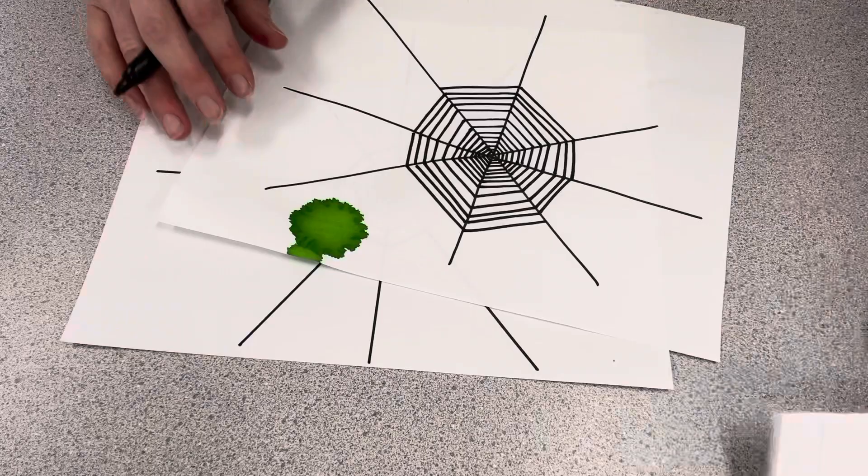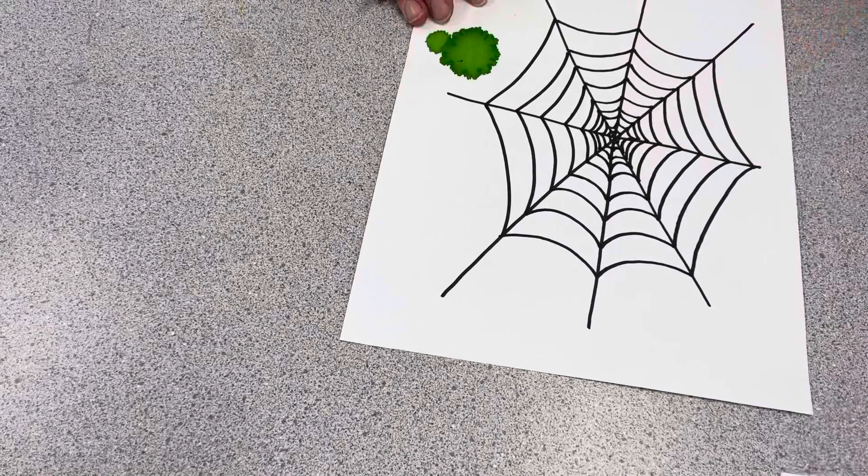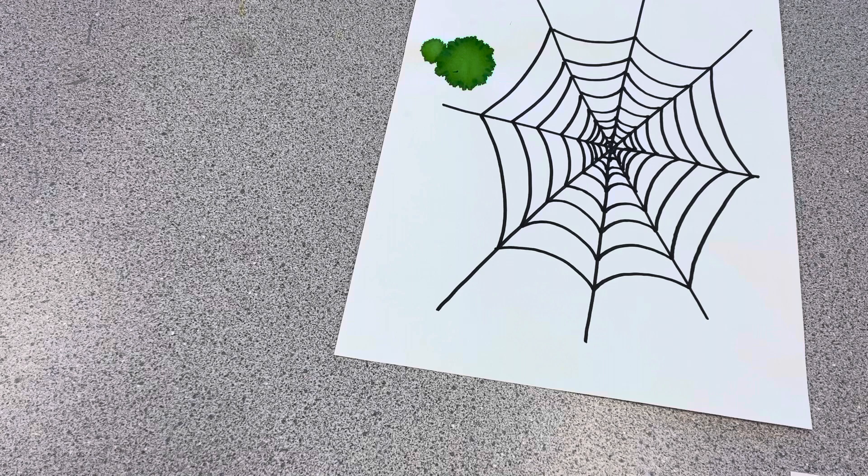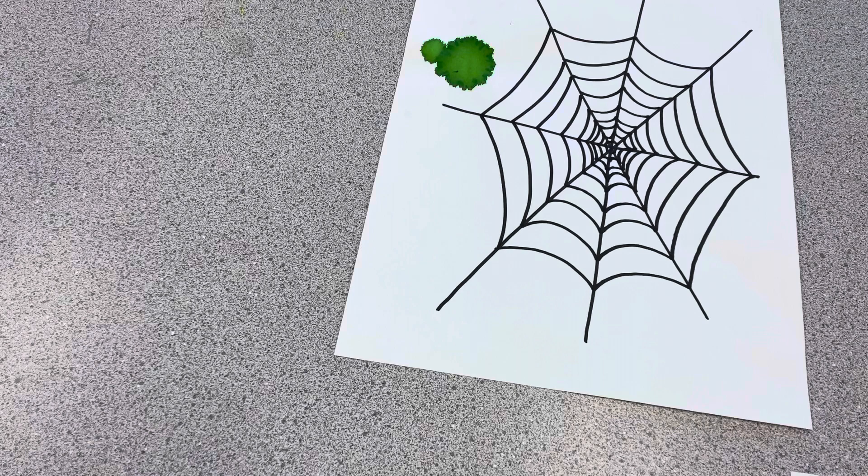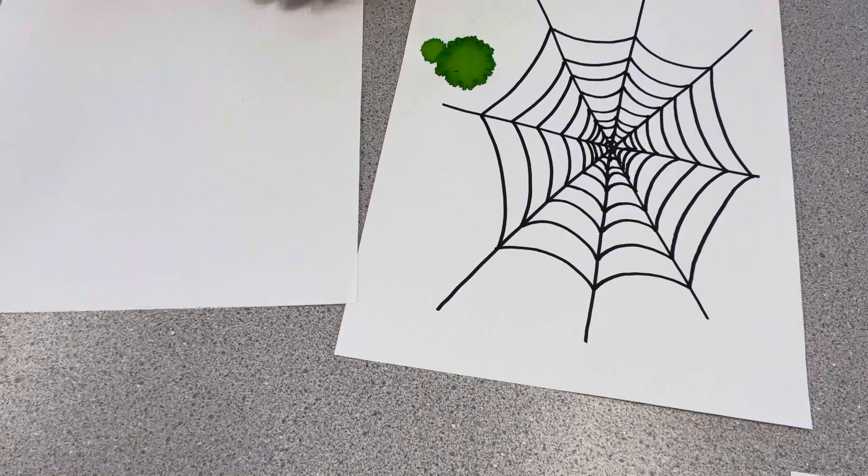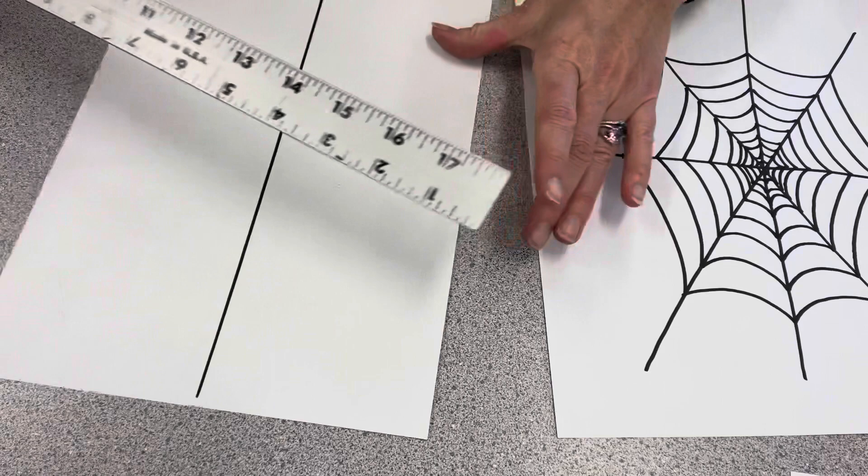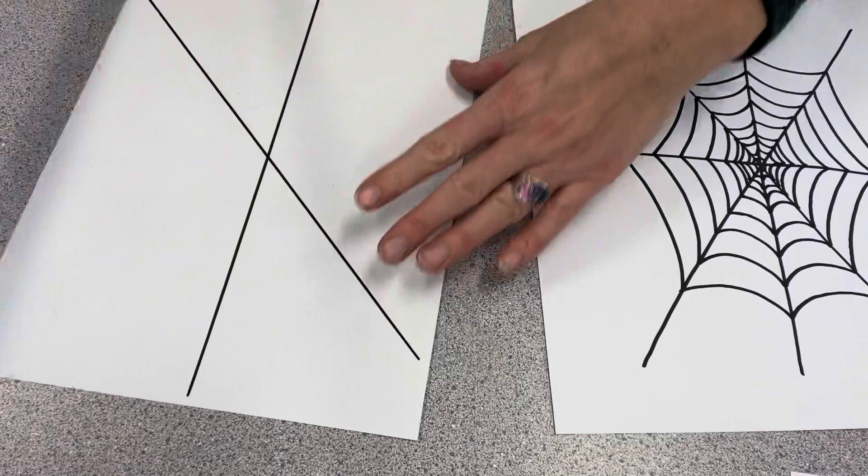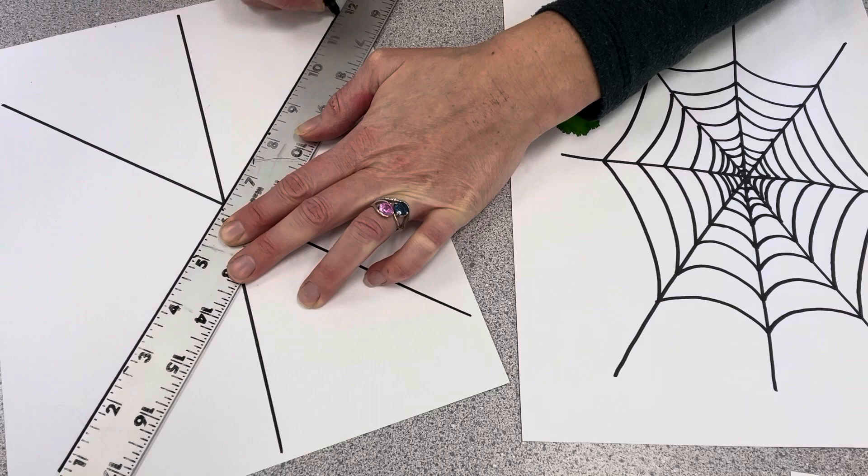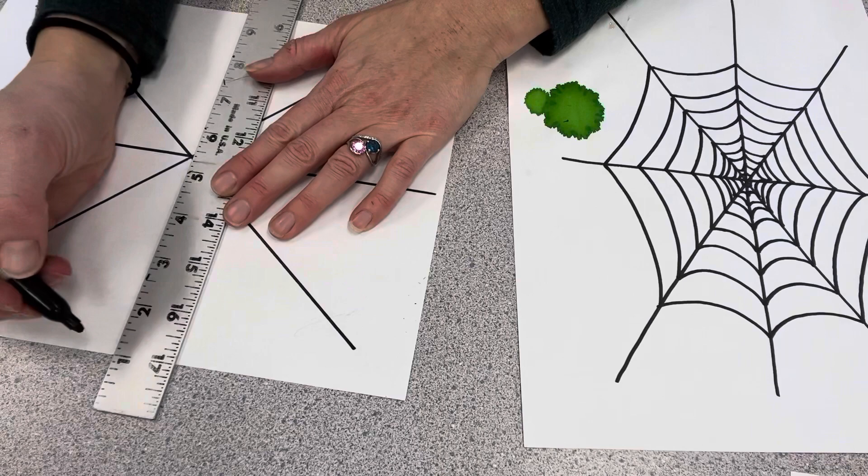Okay, so now I'm going to show you this kind of web. I'm going to grab a piece of paper. That's not the paper I want. There's the paper that I want. Okay, so we're going to do four intersecting lines again. One, two, three, and four.